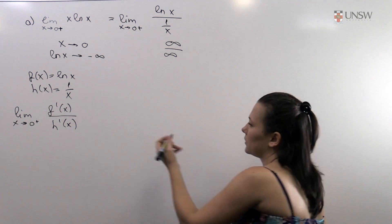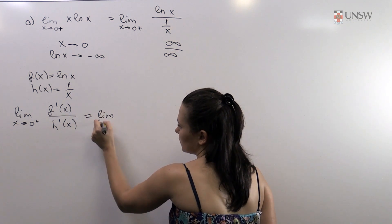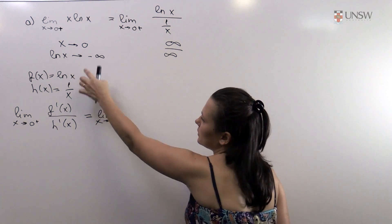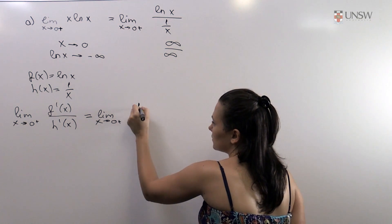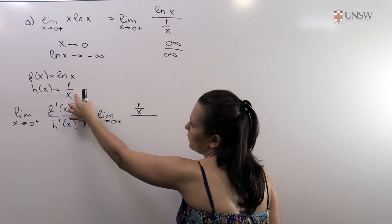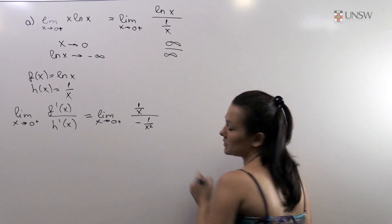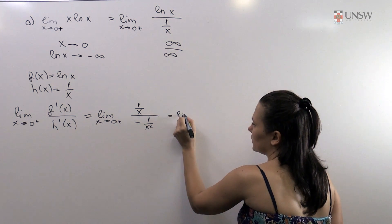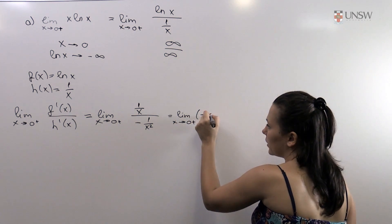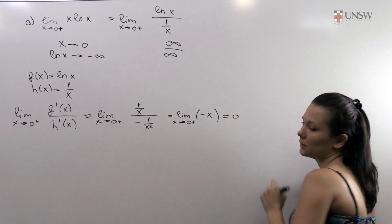Look at what this limit equals. The limit as x goes to zero from the right: f'(x) is the derivative of ln(x), which is 1/x. And h'(x) is the derivative of 1/x, which is minus 1/x². This simplifies to the limit as x goes to zero from the right of minus x. This limit of course exists and equals zero.